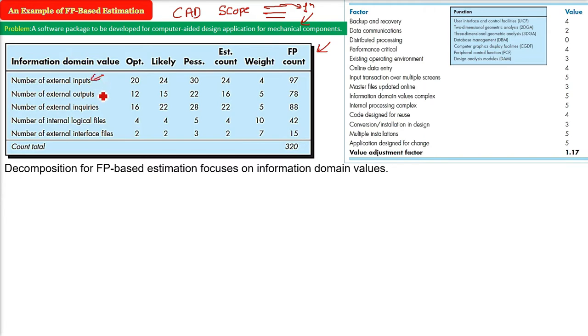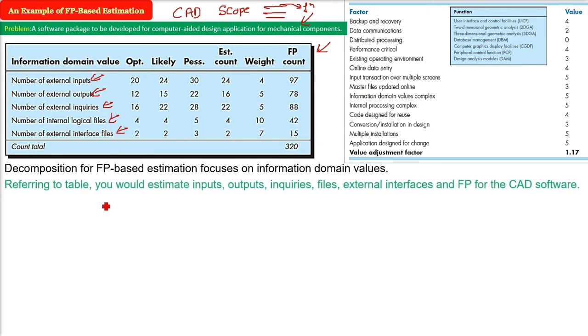So decomposition of FP based estimation focuses on the information domain values which are these five values. So external inputs, external outputs, external inquiries, internal logical files, external interface files. Now if you see the table here, we already found out the optimistic, likely, and pessimistic value.